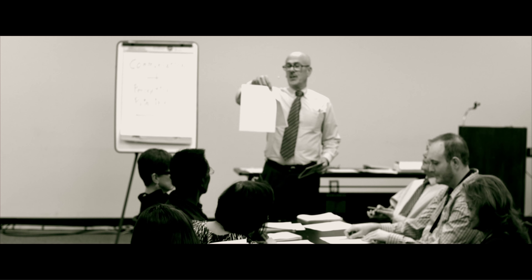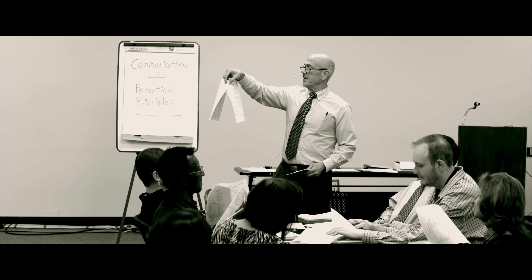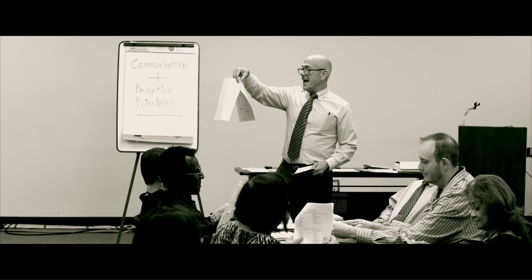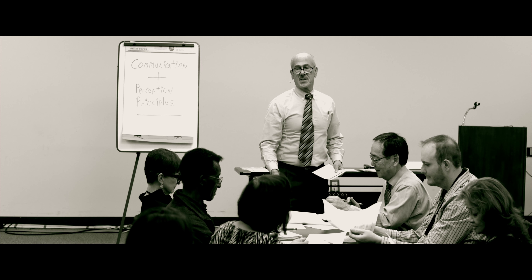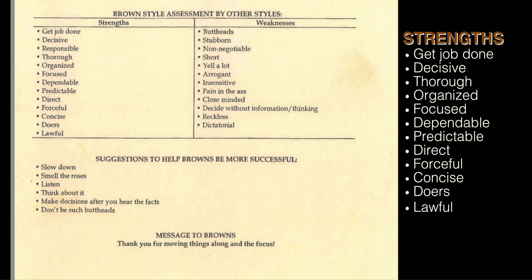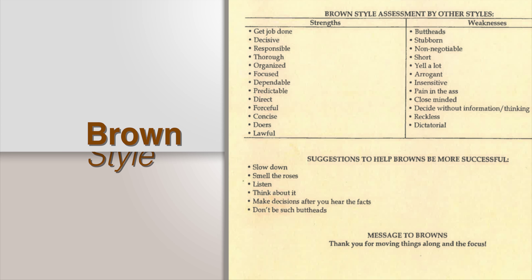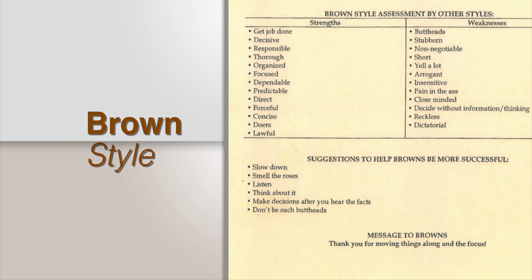Now you get to turn the page and look at your particular style assessment. You will see at the top: strengths, weaknesses, and then the style assessment by other styles — strengths and weaknesses that other people see in you — and then some suggestions on the bottom to help you be more successful. Take a few minutes and look at that for your color.